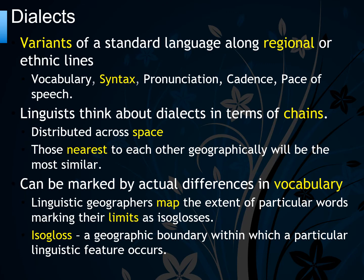Those dialects nearest to each other geographically will be the most similar and can be marked by actual differences in vocabulary. Linguistic geographers map the extent of particular words, marking their limits as isoglosses. Isoglosses are a language's boundaries.